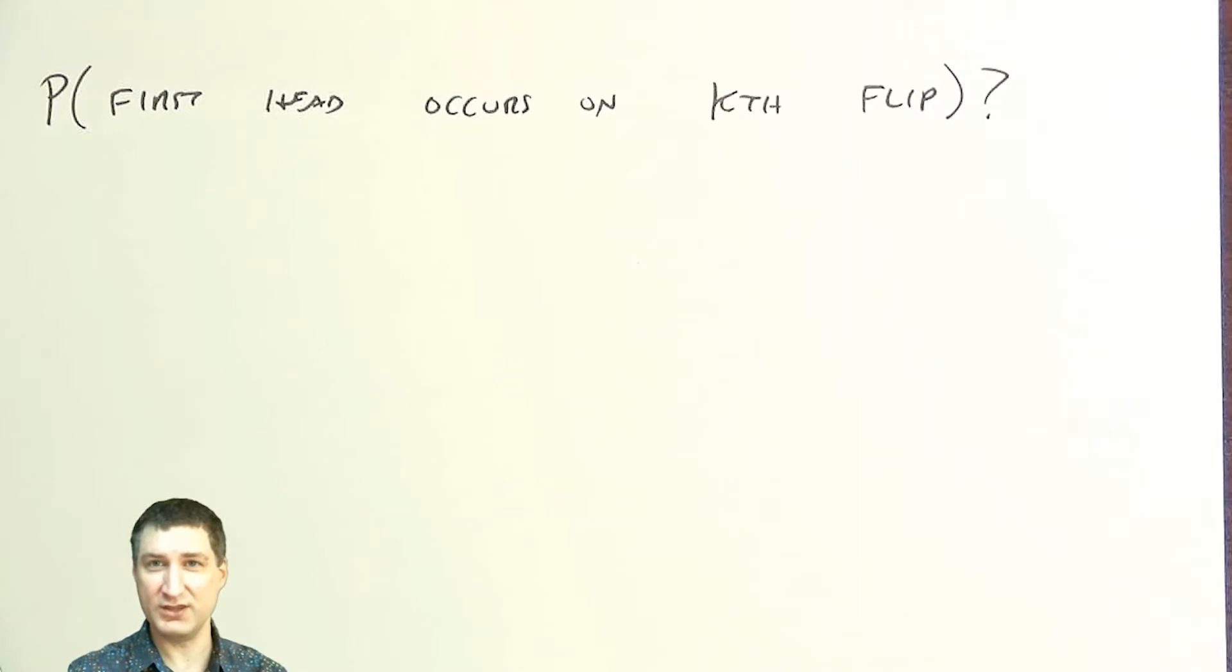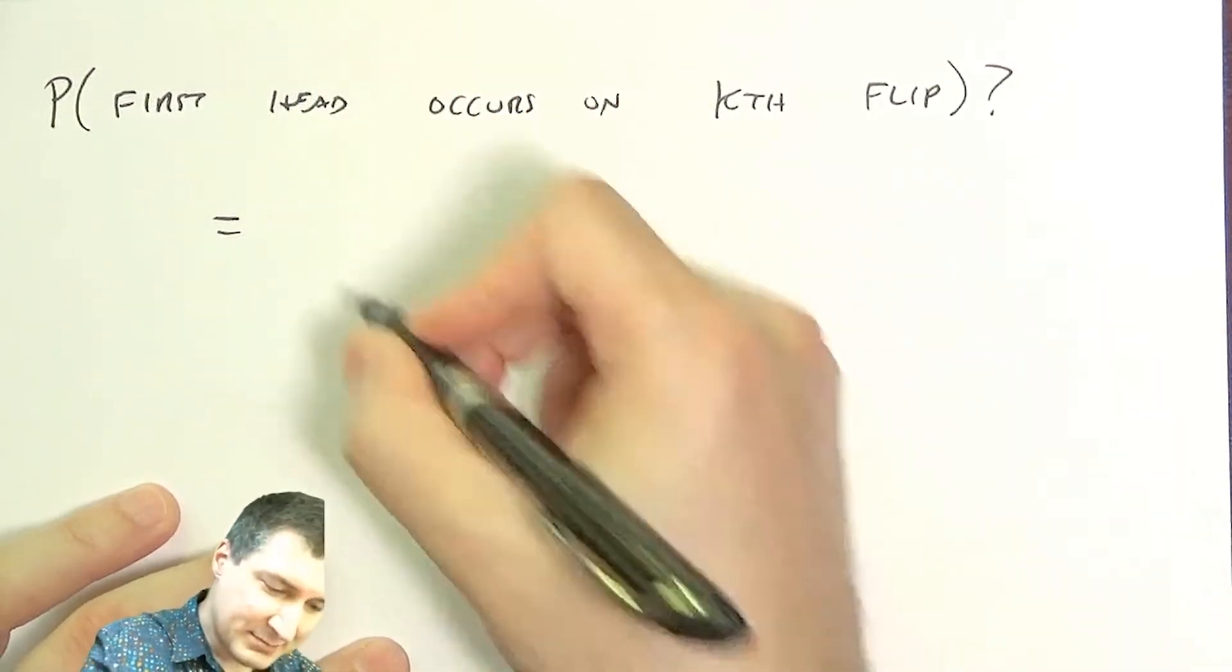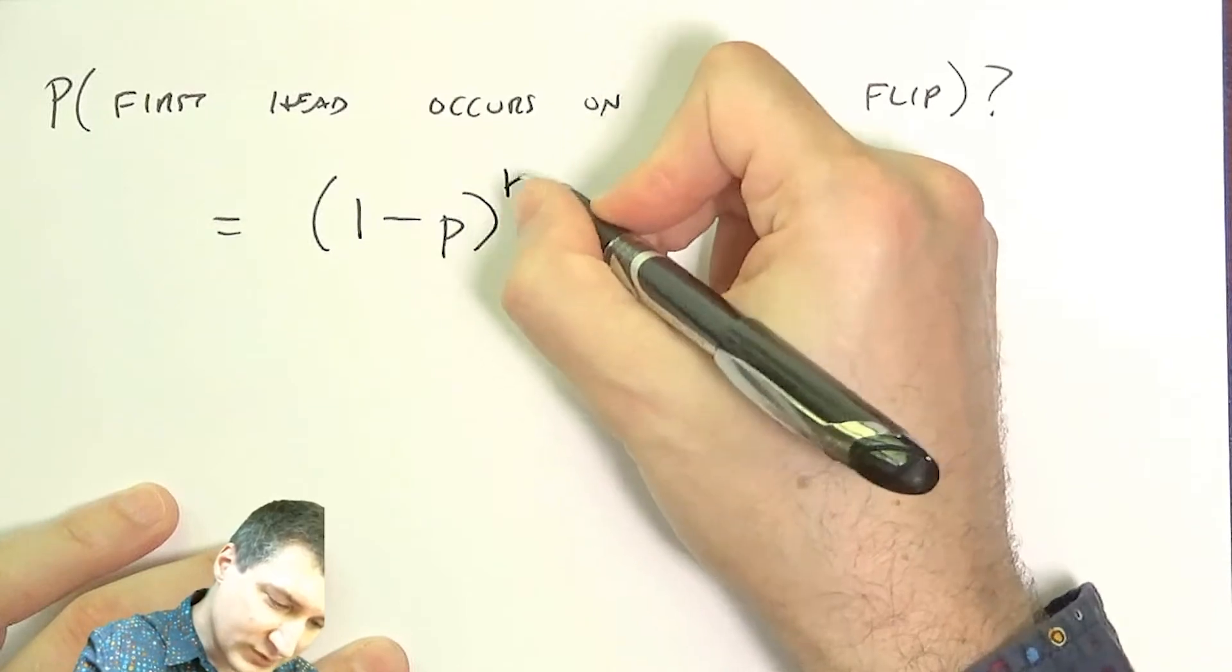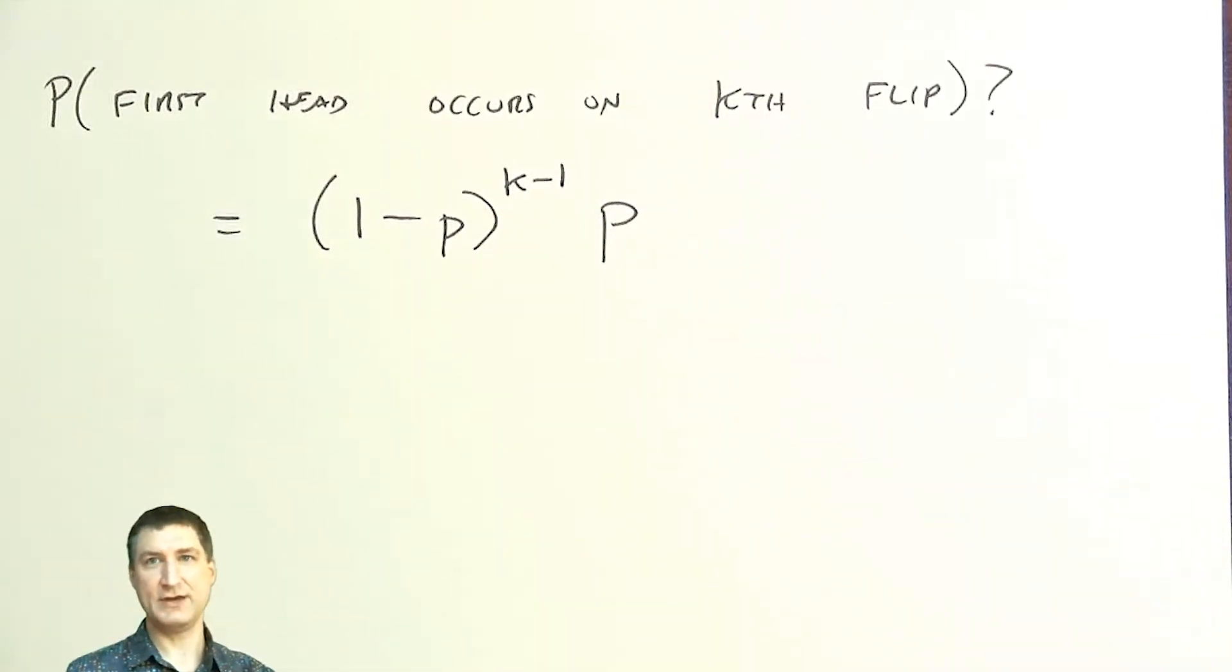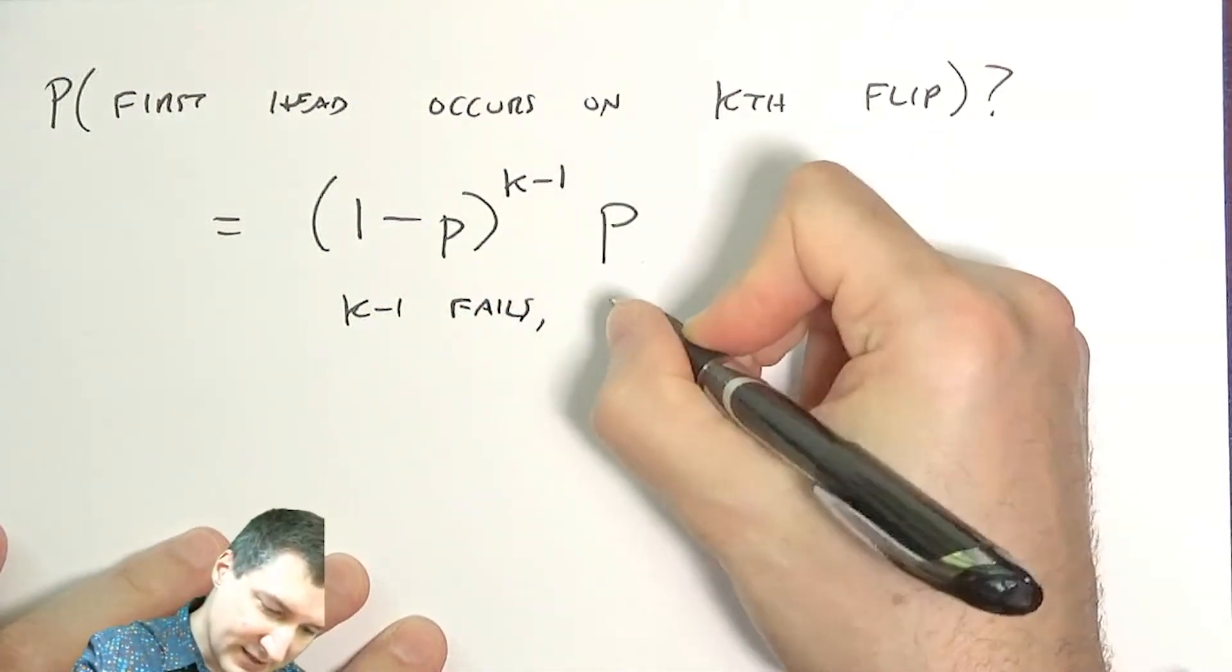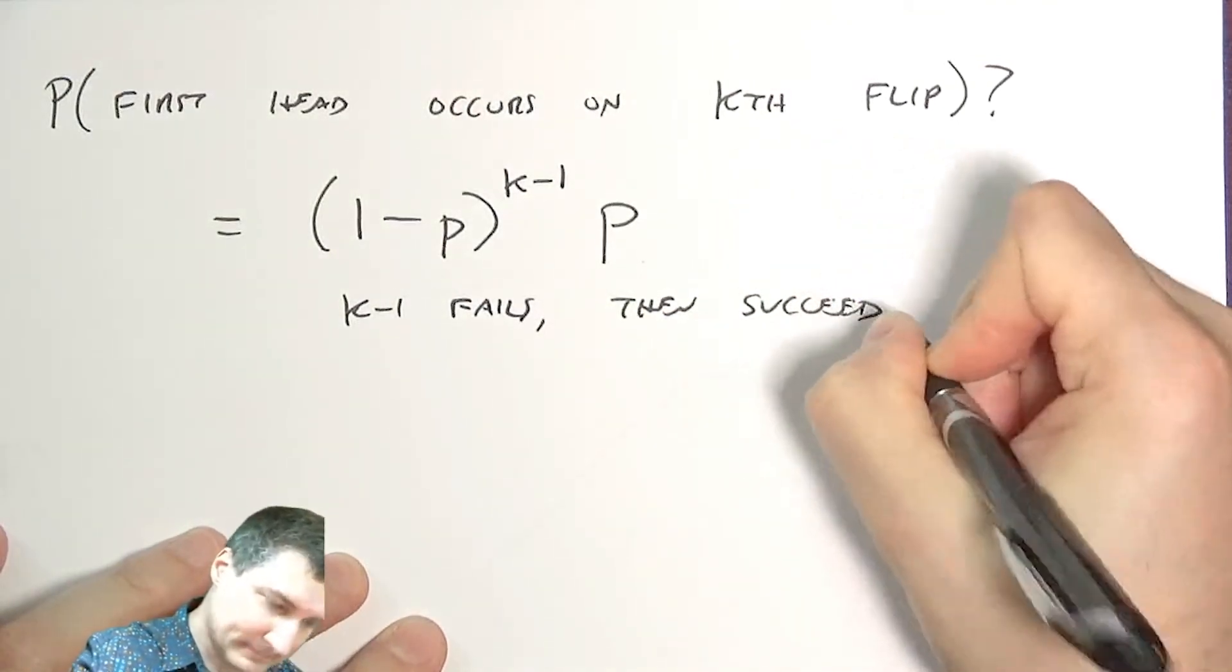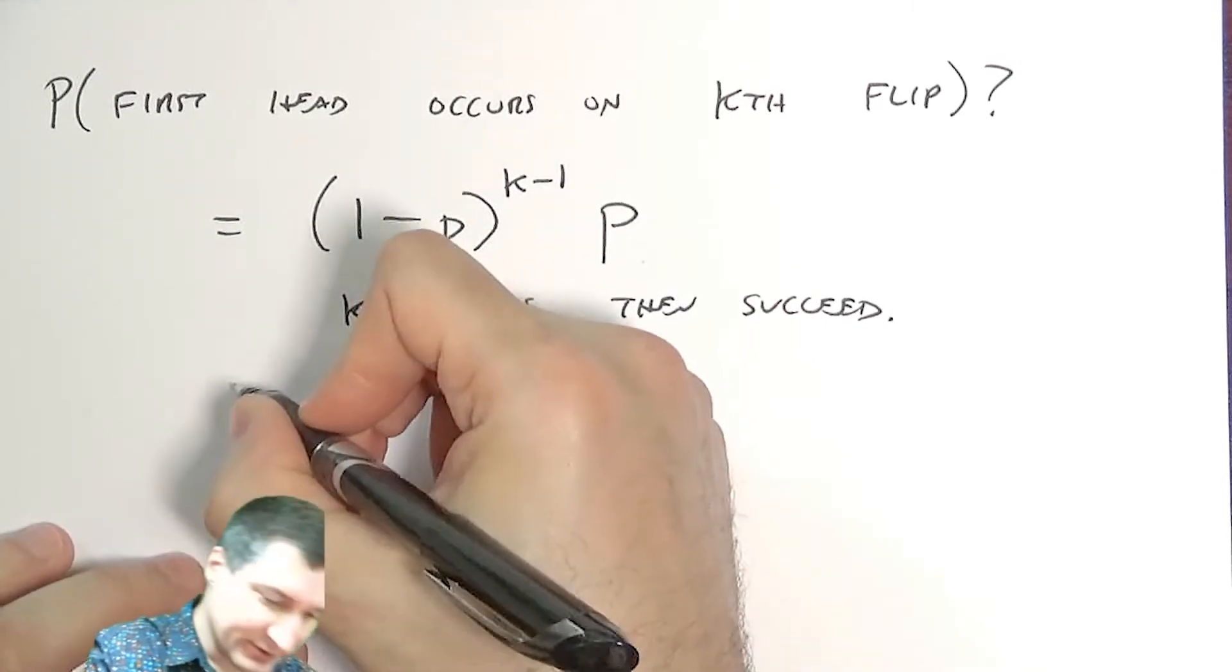I can compute that what has to happen is I have to fail k minus one times, and then I have to succeed once. So this is k minus one fails, then succeed, and then I stop flipping. This is called the geometric probability law.